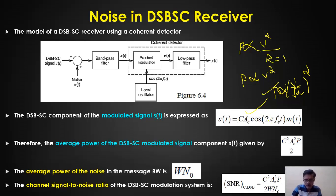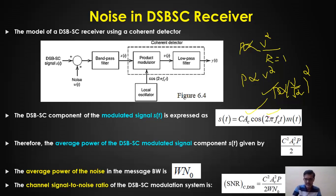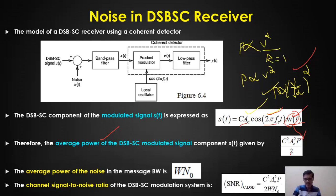The average power of the DSB-SC signal is c²·Ac²·P/2, where P is the power of the message signal. P equals Am²/2 using the same formula — where Am is the amplitude of the message signal. Whenever P appears in the derivation it refers to the power of the message signal. This is the formula for the average power of the DSB-SC modulated signal.